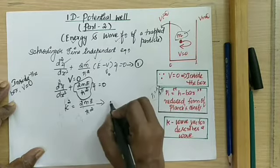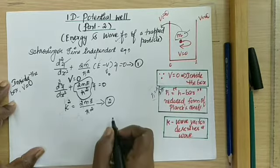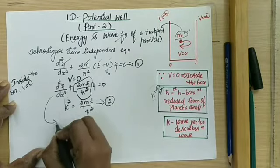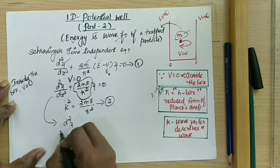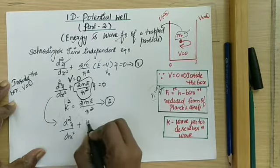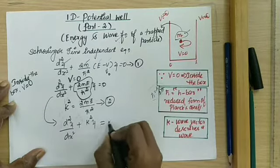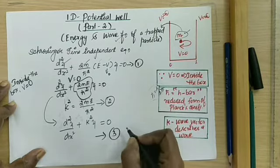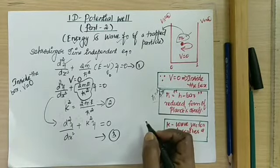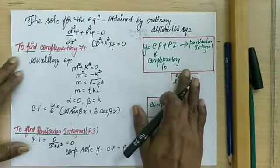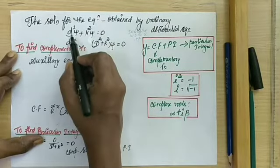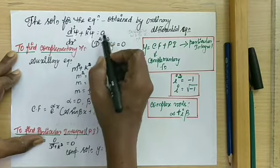We have simplified the expression. Hence this expression becomes d squared psi by dx squared plus k squared psi is equal to 0. We will mark this as the third equation. This equation can be simplified by using the ODE, that is the ordinary differential equation. We need to find out the solution for this equation.